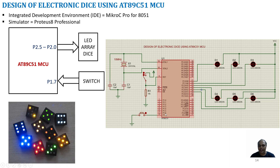We are going to connect a push button switch to Port 1.7. By default this port has an internal pull-up resistor, so thereby this port pin will be at logic high. Whenever I press the switch, Port 1.7 will go to 0. I have connected 6 LEDs to Port 2.0 to Port 2.5, where the cathodes are connected to the microcontroller whereas the anodes of the LEDs are connected to the power supply.